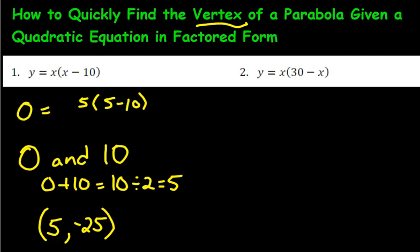Let's do the next one here. So what would the zeros be in this situation? Well, if x was zero, it'd be zero times all of this, which would be one of the zeros. And what's the other one going to be? Thirty minus what would give us zero? Well, thirty minus thirty would give us zero.